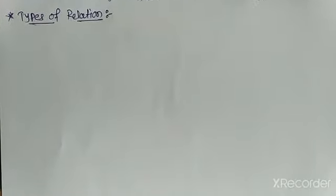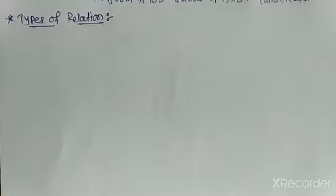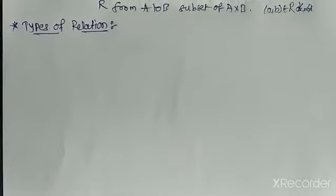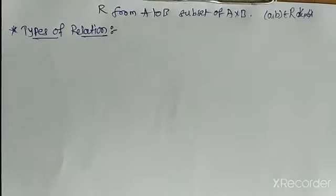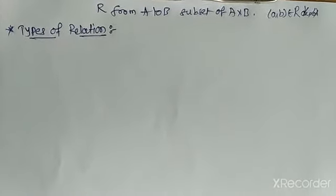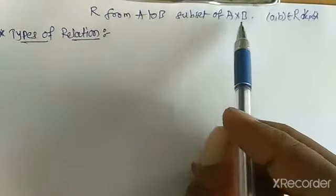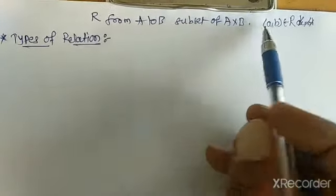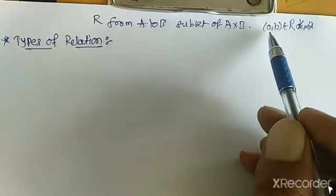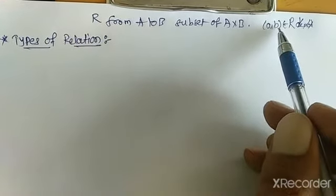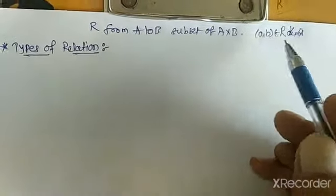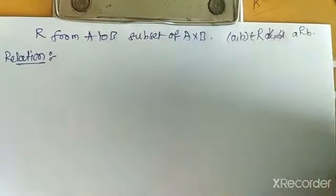Hi everybody. Today we are going to study types of relations. In the previous lecture we studied Cartesian products and the definition of relations — if R is a relation from A to B, then it is a subset of A cross B, denoted by (A, B) belongs to R, which means A is related to B.